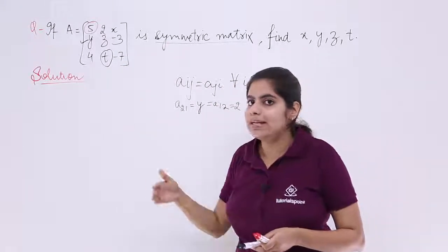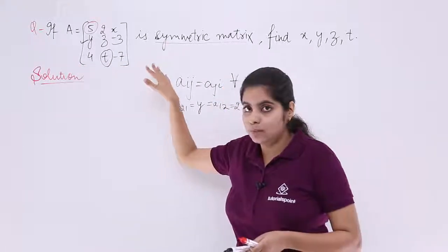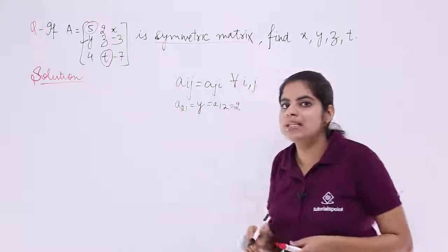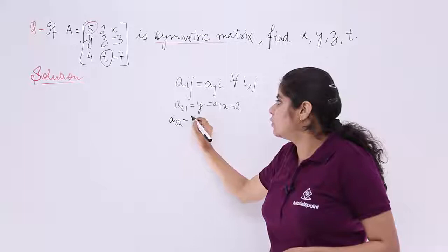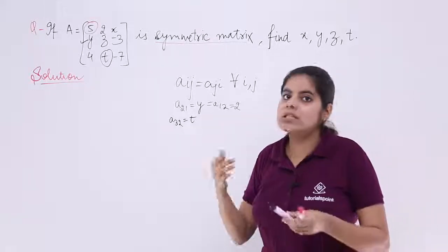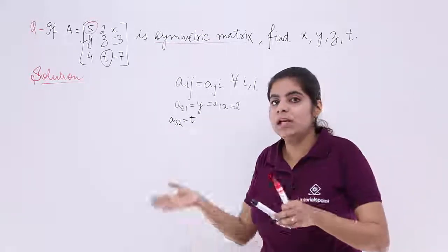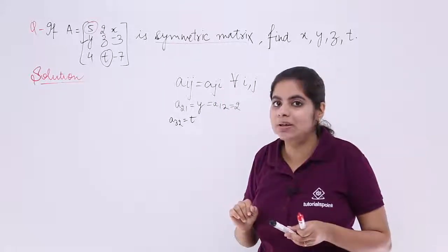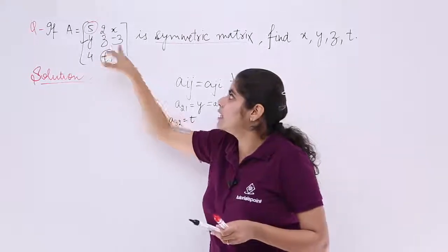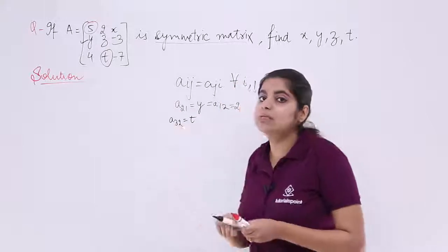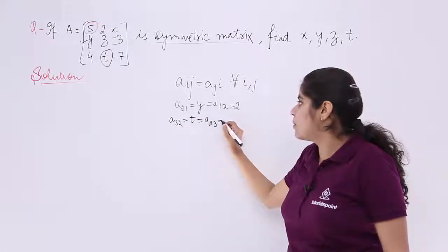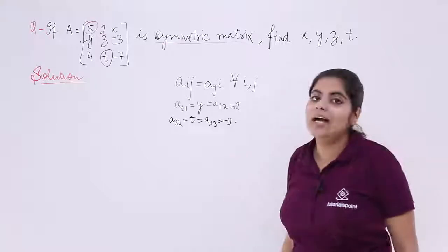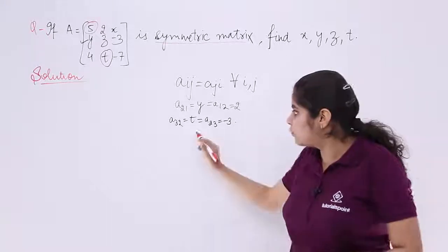T is the element of the third row and the second column, so it is A_32. It means A_32 is equal to T. If A_32 is given to me, then it should be equal to A_23 because it is a symmetric matrix. What is A_23? Second row, third column, it is minus 3. So it is equal to A_23 which is minus 3. I have the next value known to me of T.